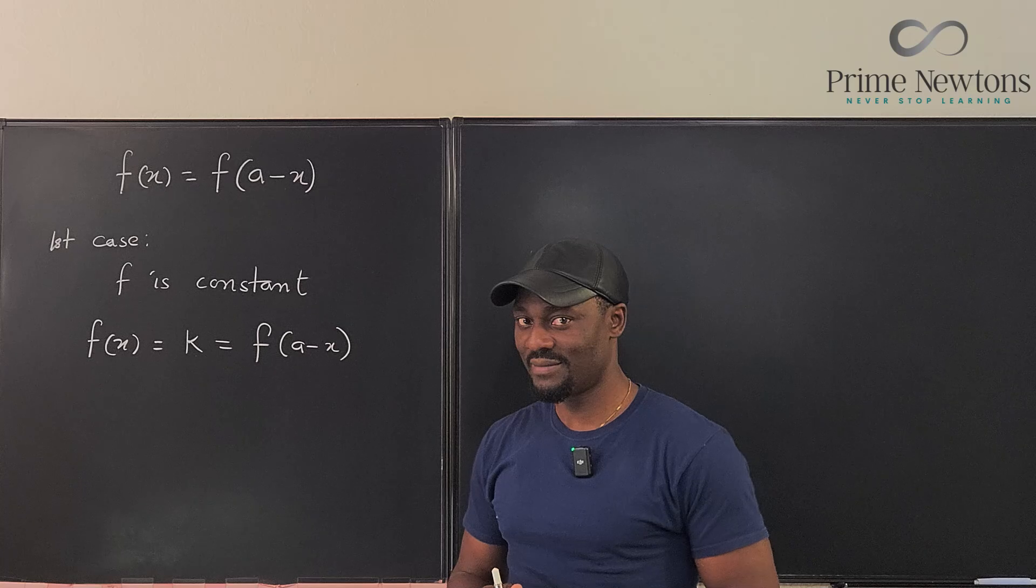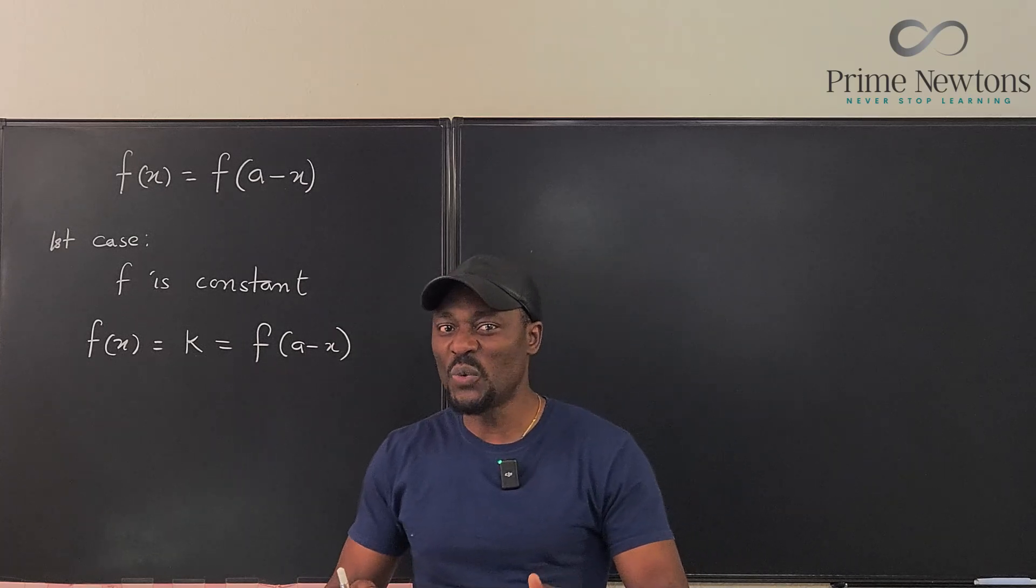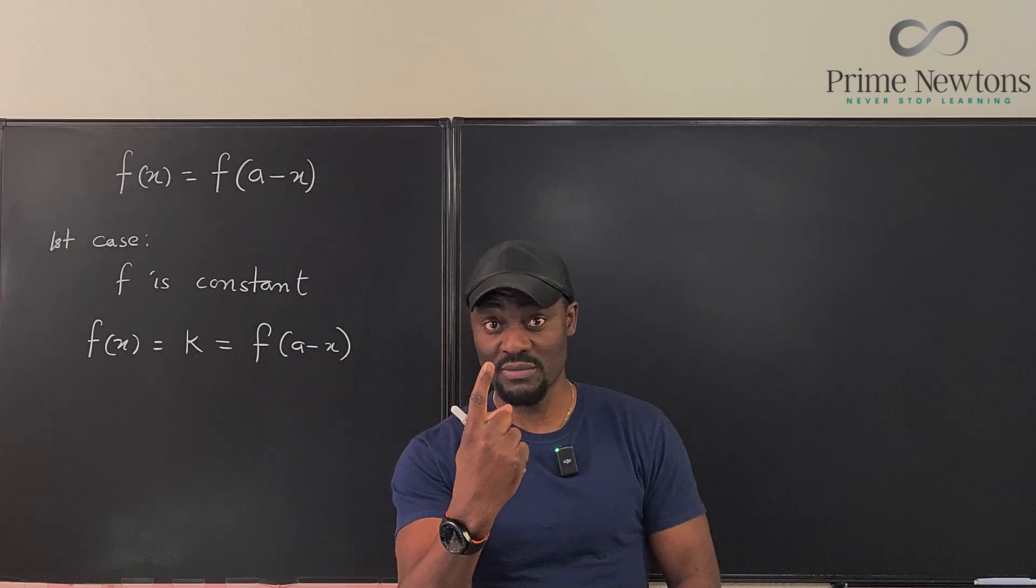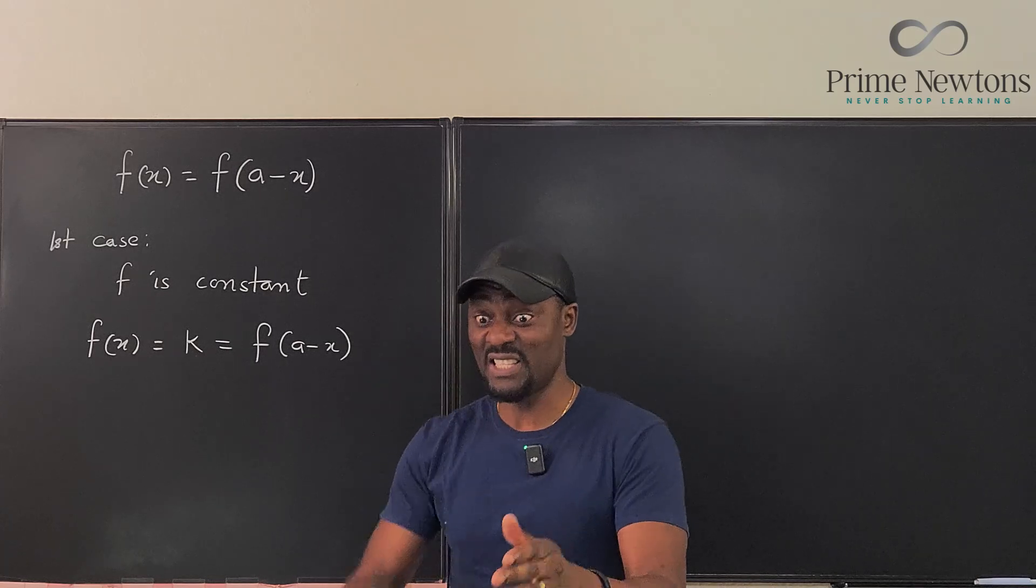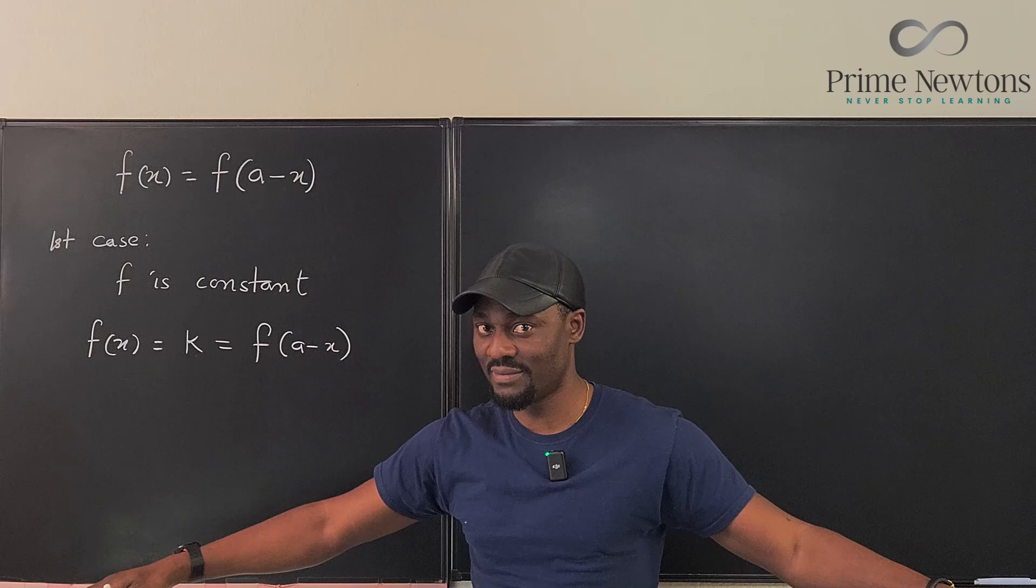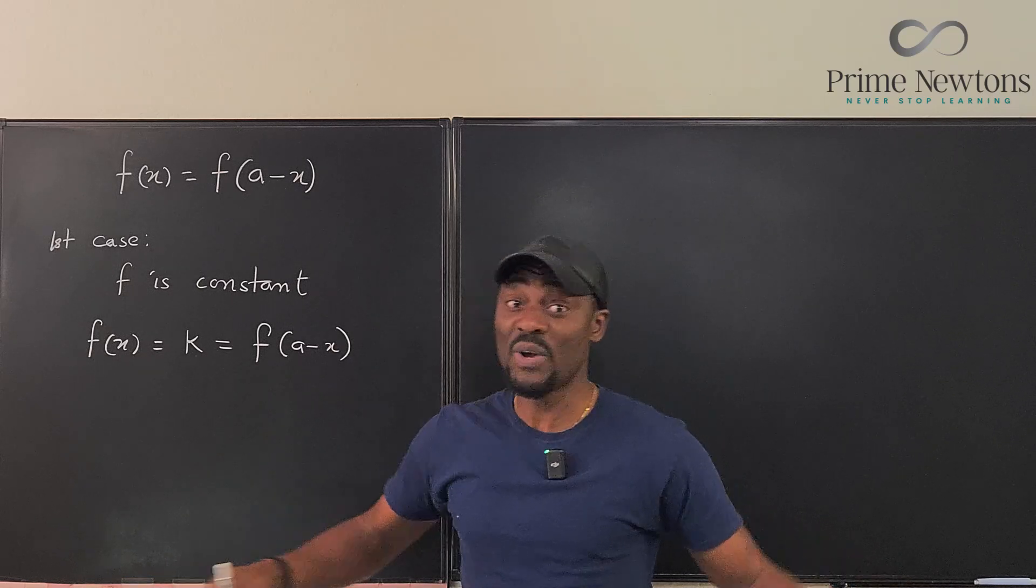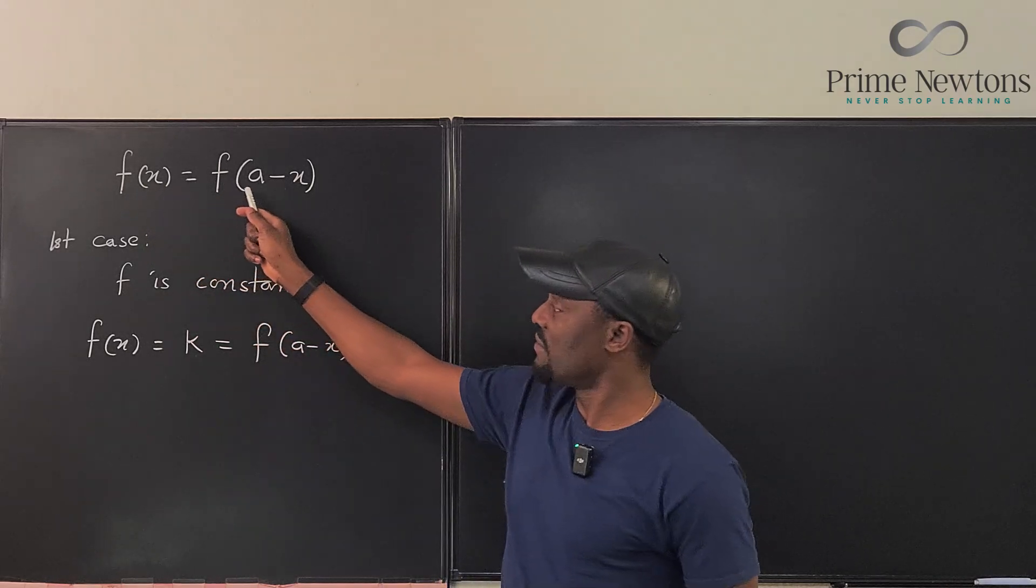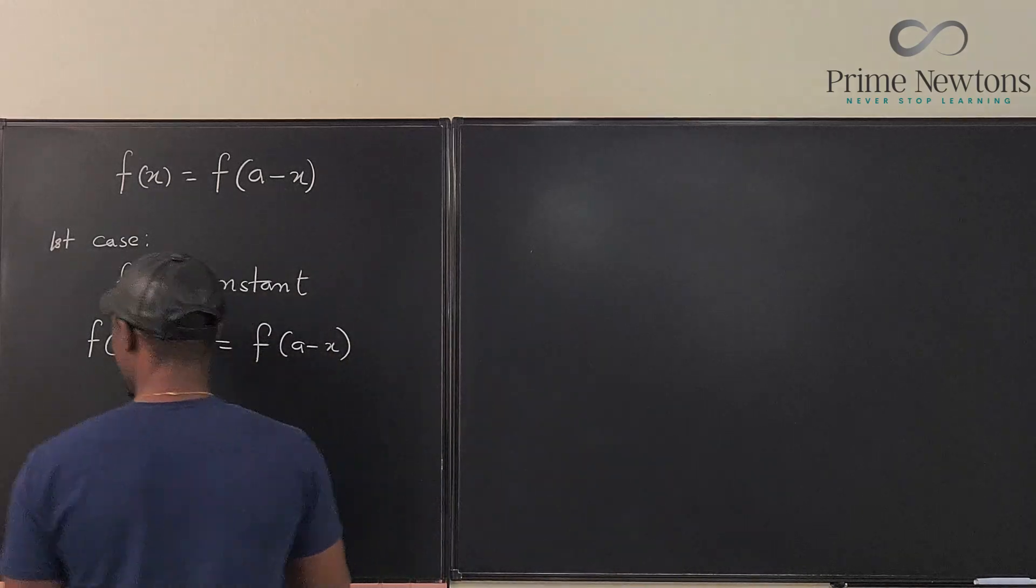There's another case. There is a case in which a function is only defined at one point, just one point. It means f(x) is only true when x is a particular number and no other number satisfies the function. And we can find that point because that point is the point where f(x) equals f(a-x). We can always work that out. So let's make it case two. Second case, domain of f is a single point.